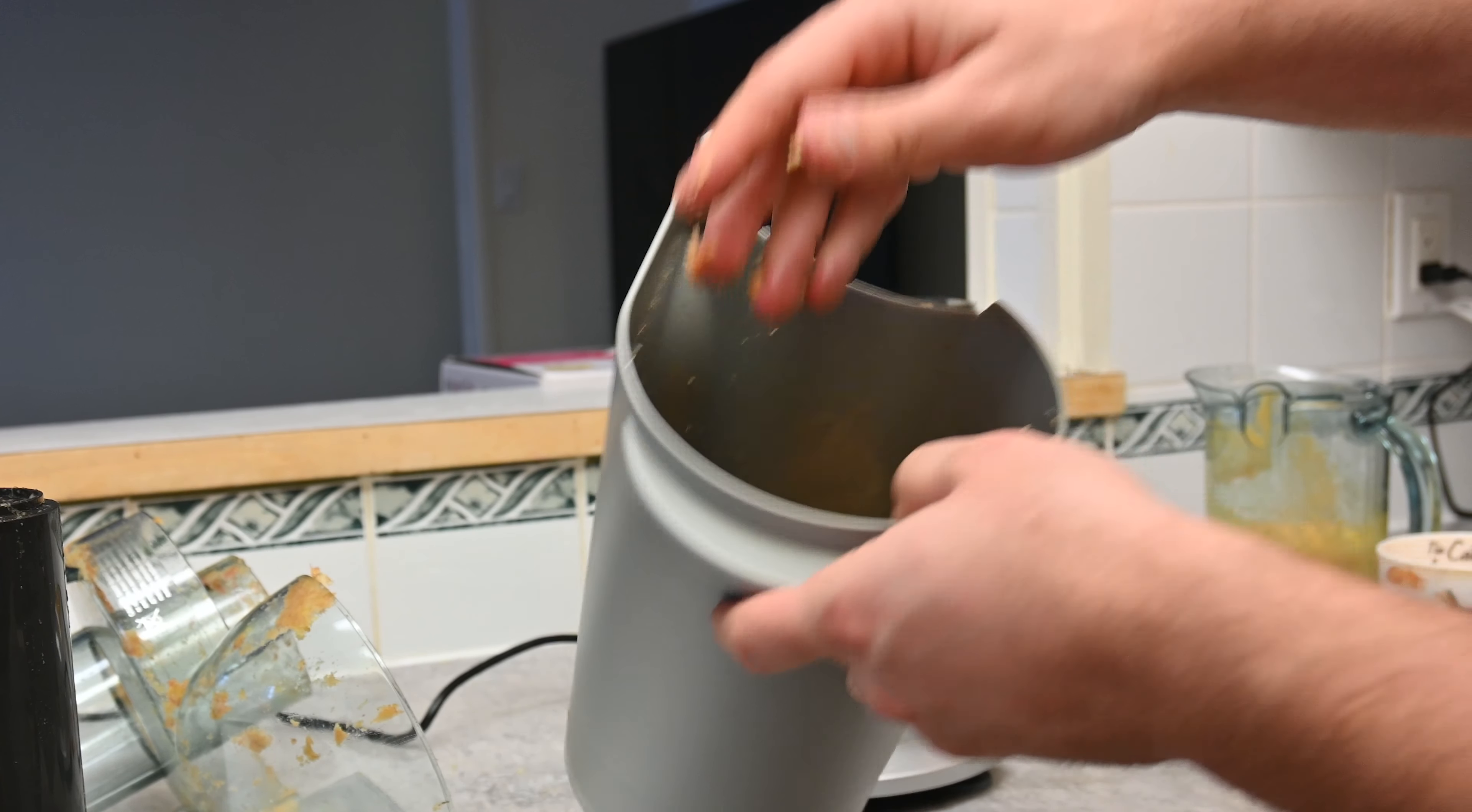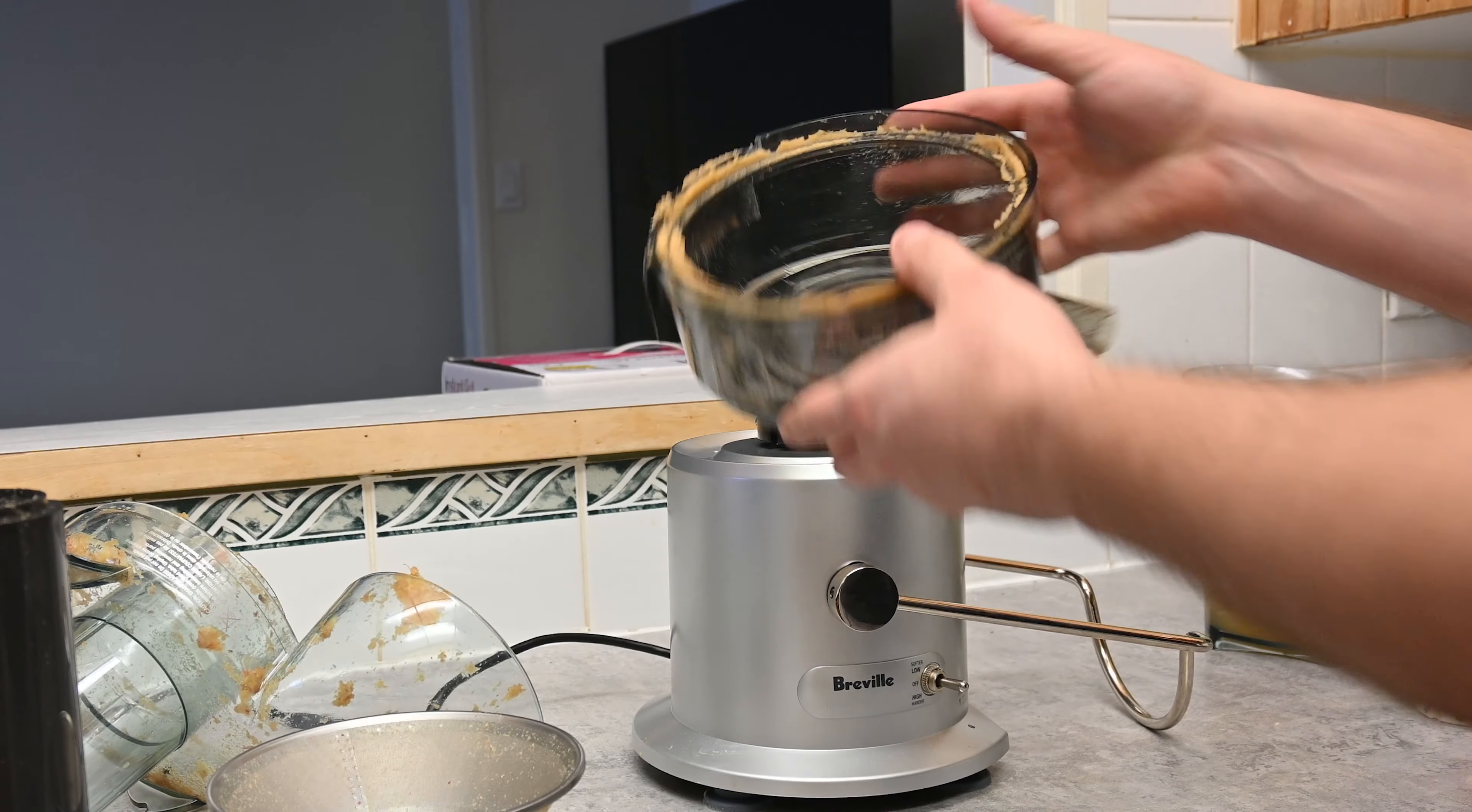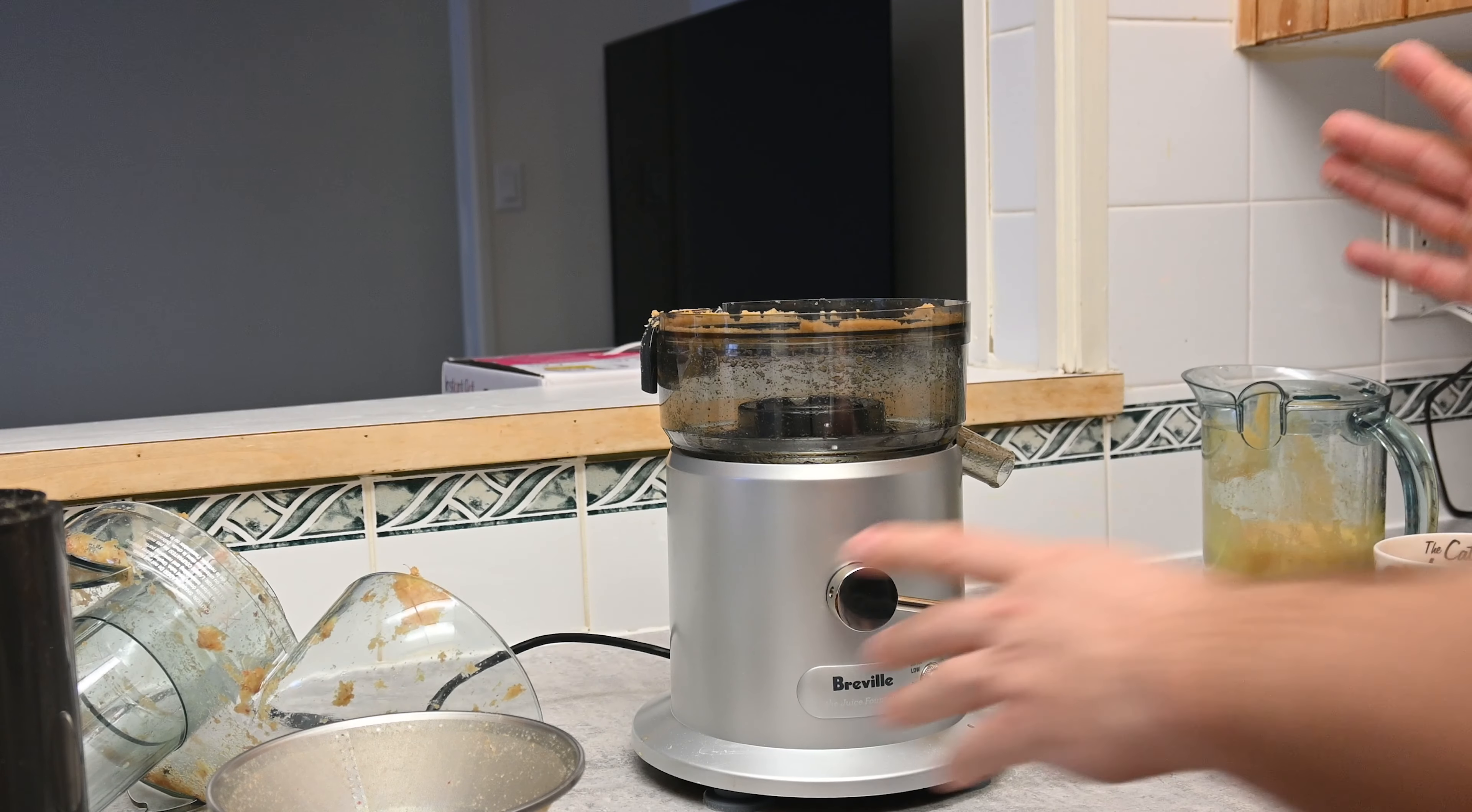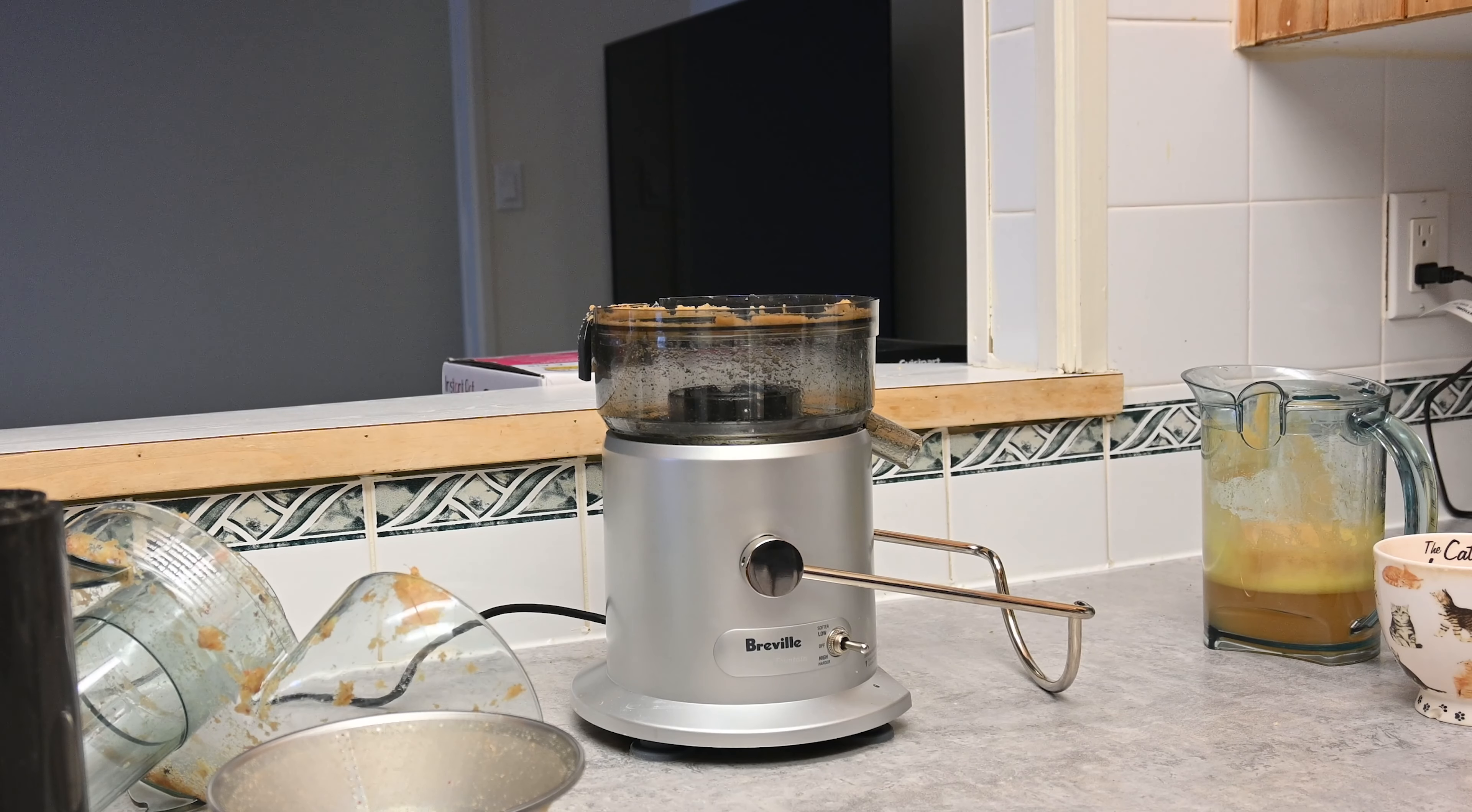On this other side is the pulp chute. So this is where all the pieces of fruit go into. It kind of swirls around, you're going to see, and all of it goes into there. It will be so dry, you'll notice how weird it is when we get it out, but that is where the pulp goes.